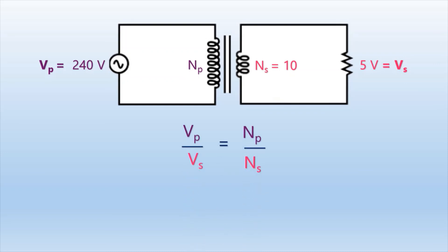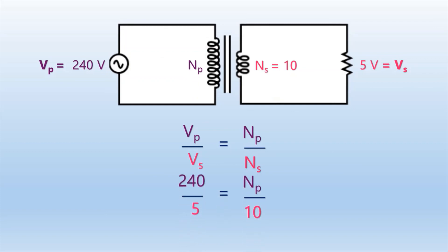Vp over Vs equals Np over Ns, so 240 divided by 5 equals Np divided by 10. By doing the normal calculation, we can easily get that Np is equal to 480 turns.